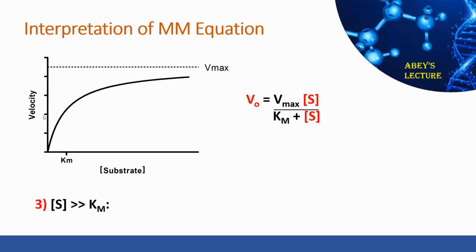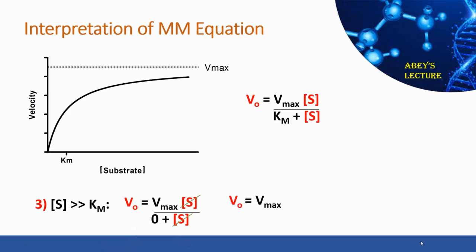Scenario three is when substrate concentration is very high — much greater than Km. Because Km is negligible compared to [S], we can substitute zero for Km in the denominator, which simplifies the equation to V0 equals Vmax. This makes sense: as we increase substrate concentration, we approach the Vmax horizontal line on the graph, and the reaction velocity cannot go any further — V0 equals Vmax.